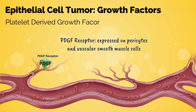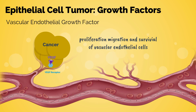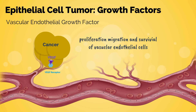Platelet-derived growth factor (PDGF) binds to PDGF receptors expressed in pericytes and vascular smooth muscle cells. Binding promotes angiogenesis by stabilizing new blood vessels. Finally, vascular endothelial growth factor (VEGF) binds to VEGF receptors, which are the central mediators of angiogenesis. They promote proliferation, migration, and survival of vascular endothelial cells. VEGF expression can be induced by other growth factors, and high serum VEGF levels are associated with decreased survival and poor prognosis.